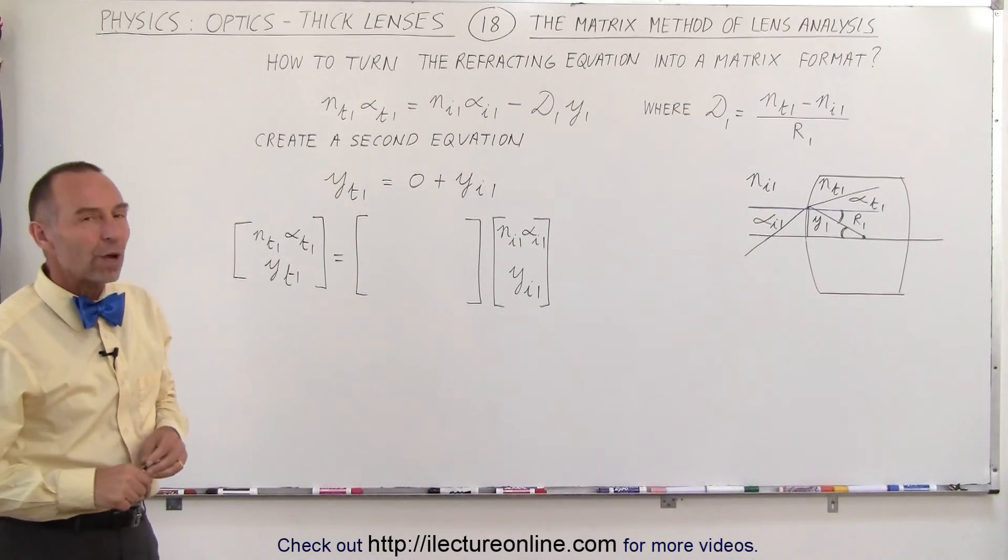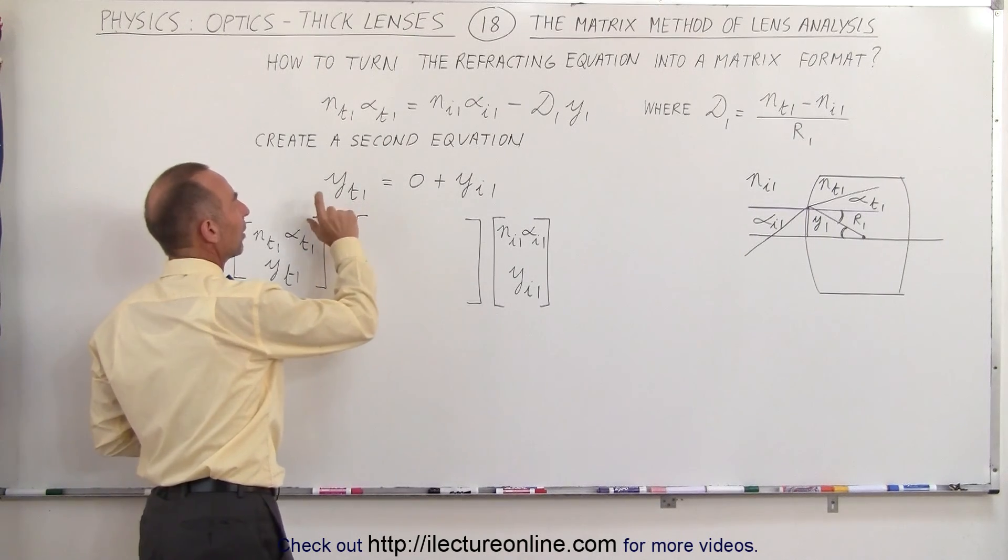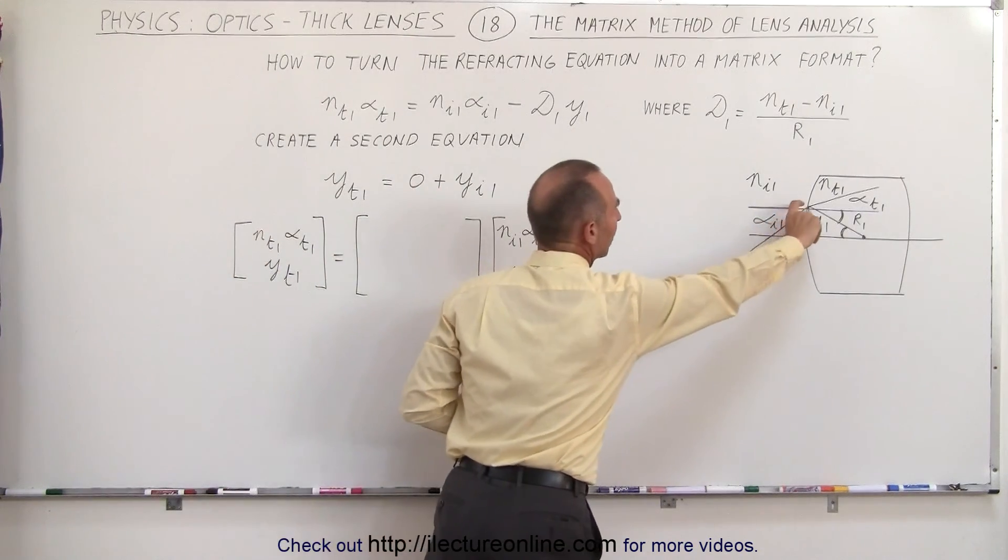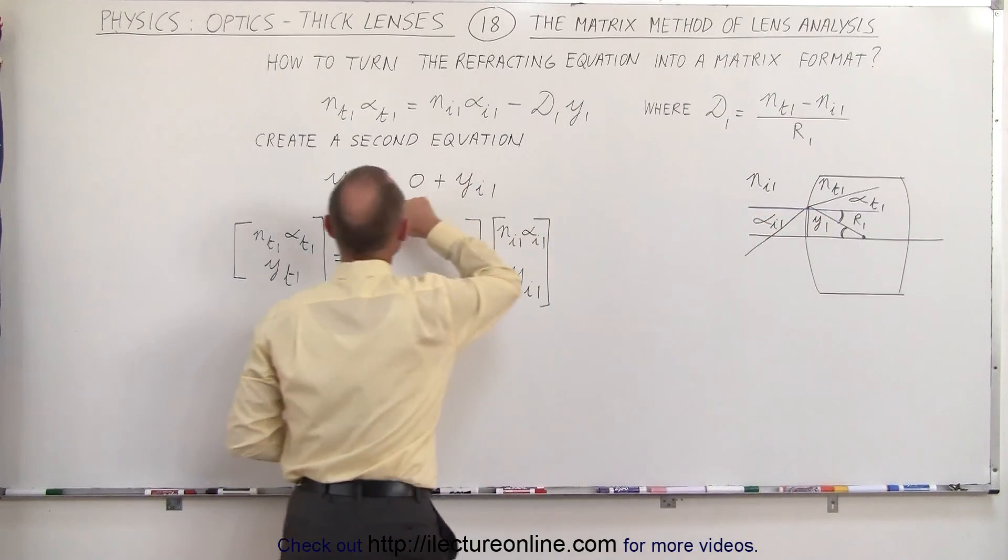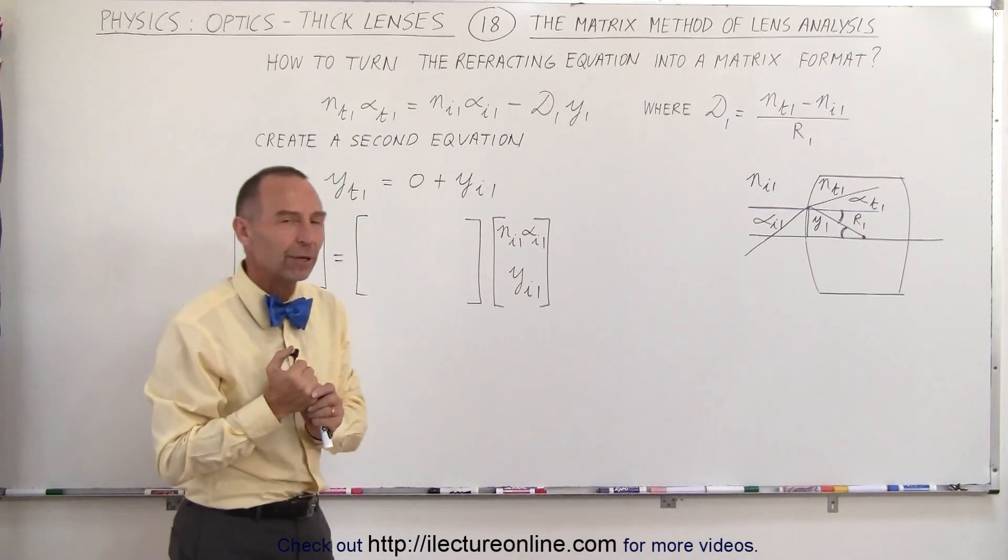We need a second equation. The second equation we need is this one where the height where you transition across the boundary just past the boundary equals 0 plus the height of the point where you transition just before the boundary.